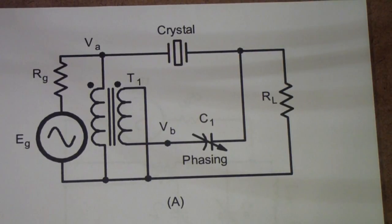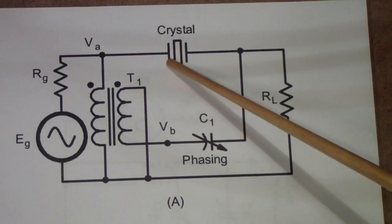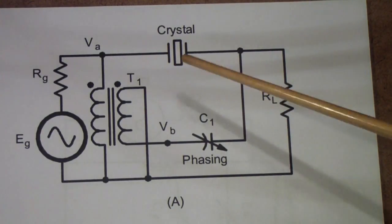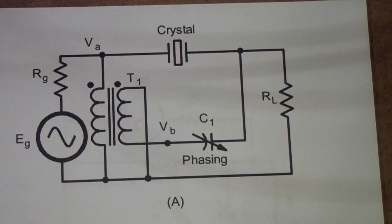A viewer asked some questions about aligning the crystal filter in the SX-62. What I'm going to describe is actually a little more general than that. This is a procedure that will apply to practically all crystal filter circuits that use a single crystal. There are also other kinds of crystal circuits that I won't get into, lattices and other things.